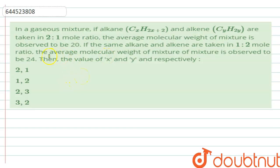First of all, the question is: In a gaseous mixture, if alkane with general formula CxH2x+2 and alkene are taken in 2:1 mole ratio, the average molecular weight of mixture is observed to be 20.